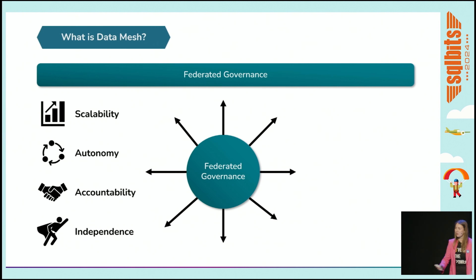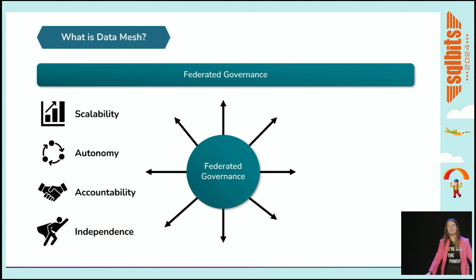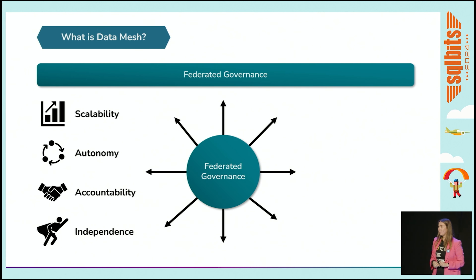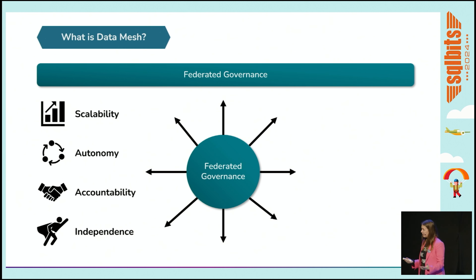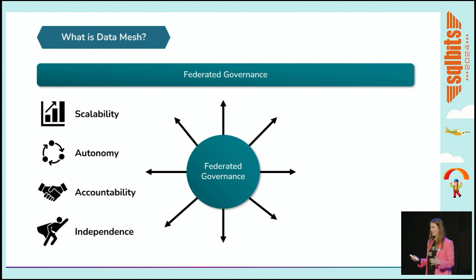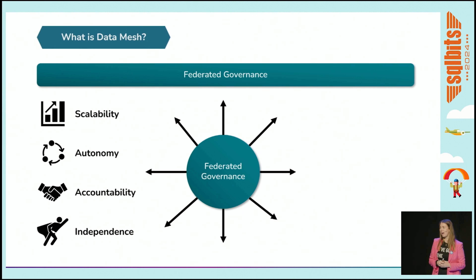We want to ensure scalability: because we're federating governance and setting up many domains, they can scale independently. It also helps with autonomy because each domain decides what they're going to do. It helps accountability — each domain is in charge of their data solutions — and independence, so you don't have to count on a big, heavy, maybe slow centralized IT department.